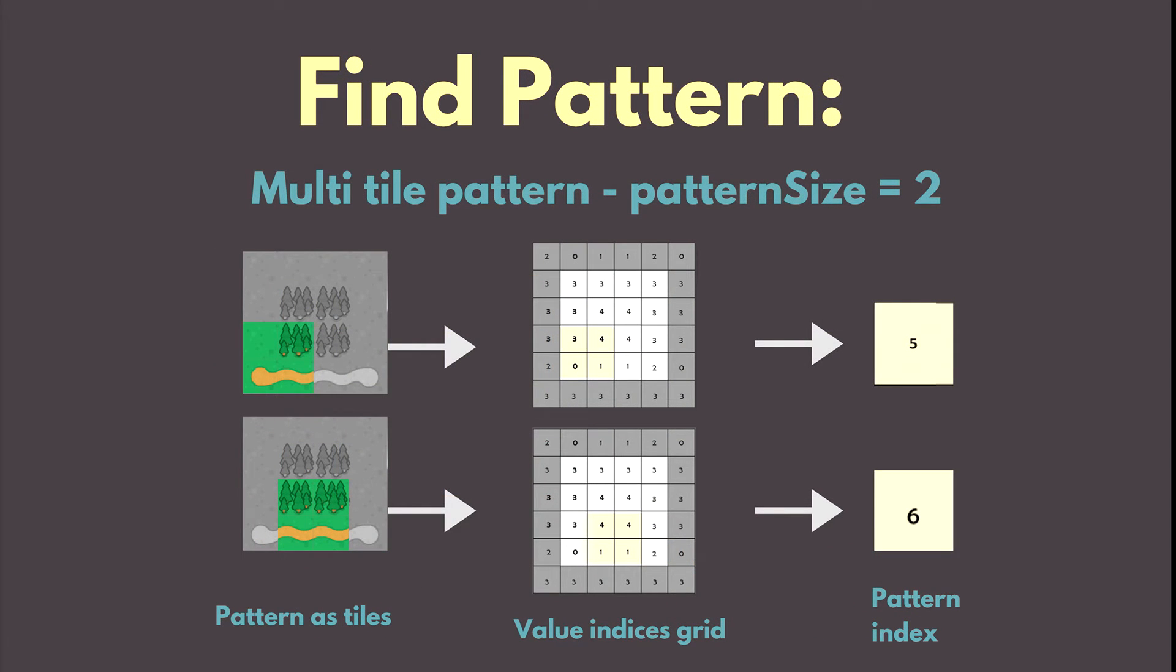So let's show how would we find patterns of size 2 inside our grid of values. Here we can see how we would go about it. We take a grid of values that represent respective tiles on our tilemap and save them inside a pattern. So the pattern takes a grid of values instead of one value, how it was in the pattern size of 1, and still represents it as a pattern with a single index.